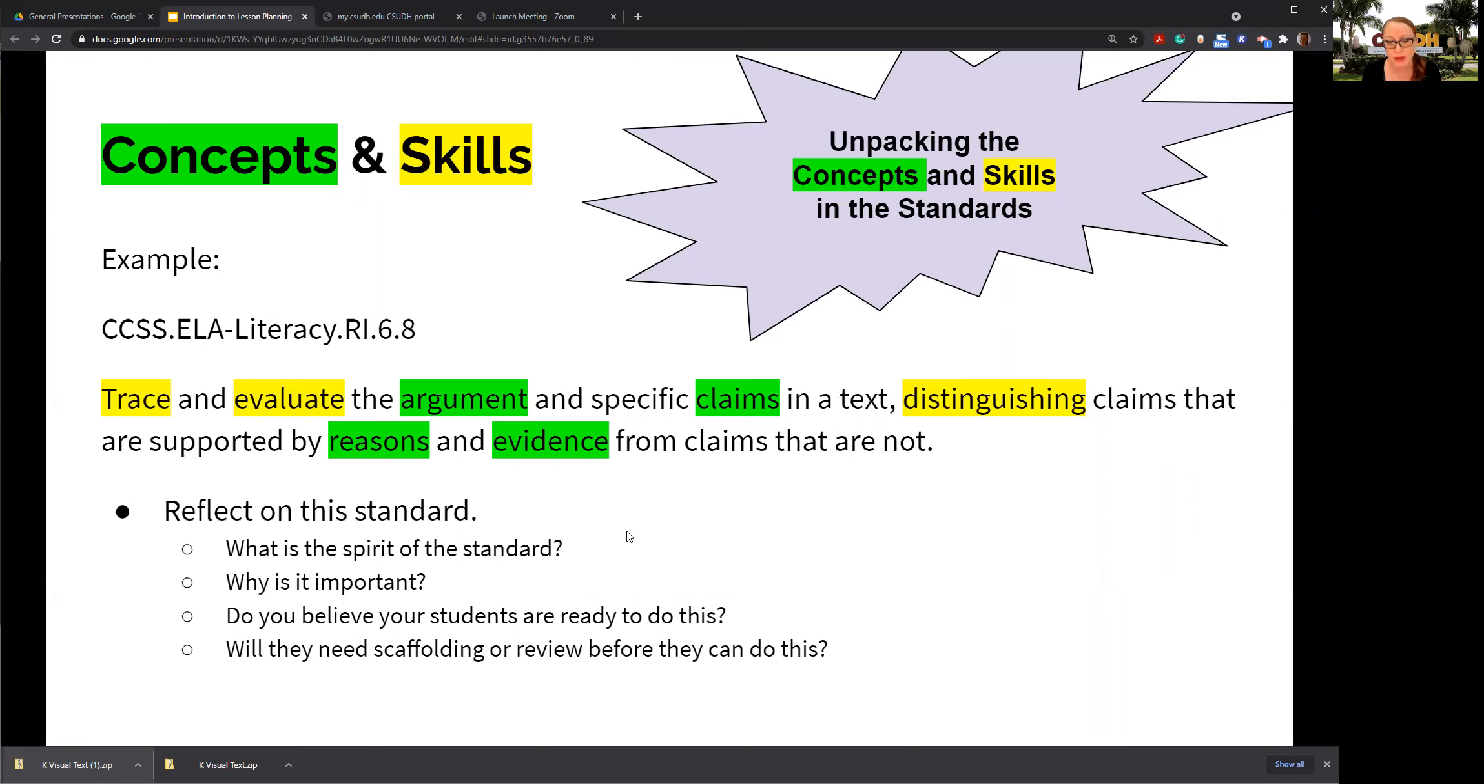So you have your standard here: trace and evaluate the argument and specific claims in a text, distinguishing claims that are supported by reasons and evidence from claims that are not. That is a lot to ask of a sixth grader. There's a lot in there and this might take me more than one day. This might be a multiple day set of lessons in my unit, but I'm just going to think about what's in this standard for now.